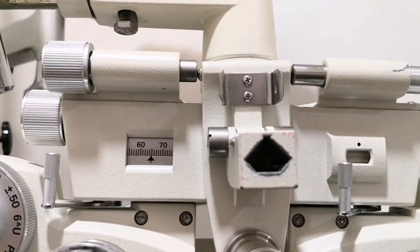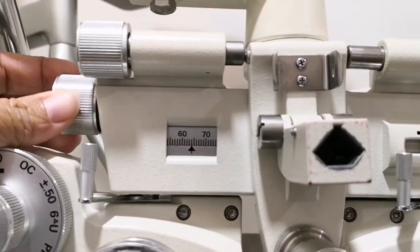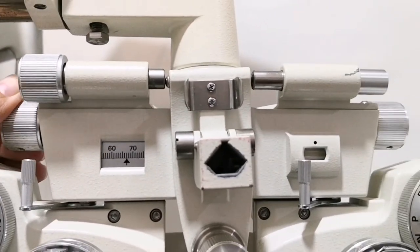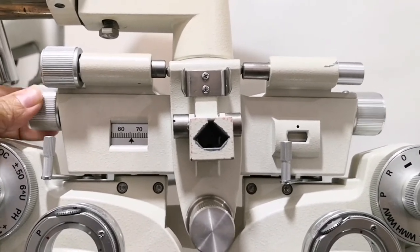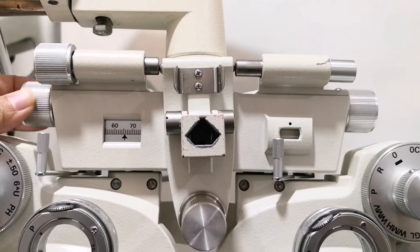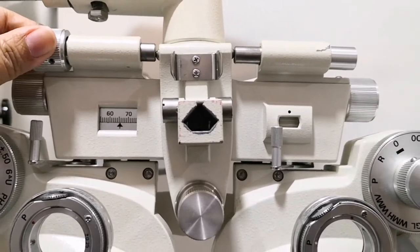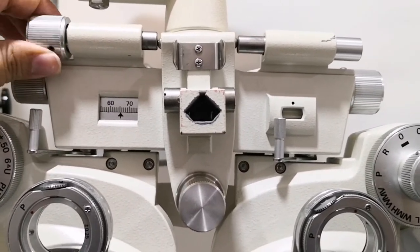Last is the adjustment. It is composed of the PD knob or pupillary distance knob. It controls or adjusts the PD according to the patient's PD. And we have the leveling knob with spirit level.